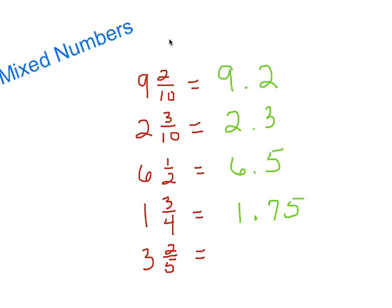Finally, three and two-fifths. Fifths can be a little more challenging, but remember: multiply the numerator and denominator by two to get an equivalent fraction. Two times two is four, five times two is ten — so two-fifths equals four-tenths. That gives us three and four-tenths, or three point four. How did you do? Thanks for joining us — hopefully next time you'll be even smarter. Bye!